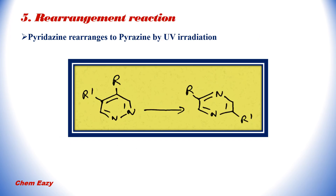This is another reaction of pyridazine, that is a rearrangement reaction. Pyridazine rearranges to pyrimidine by ultraviolet irradiation. Here you can see the reaction: this is the pyridazine ring, and after rearrangement it becomes pyrimidine.